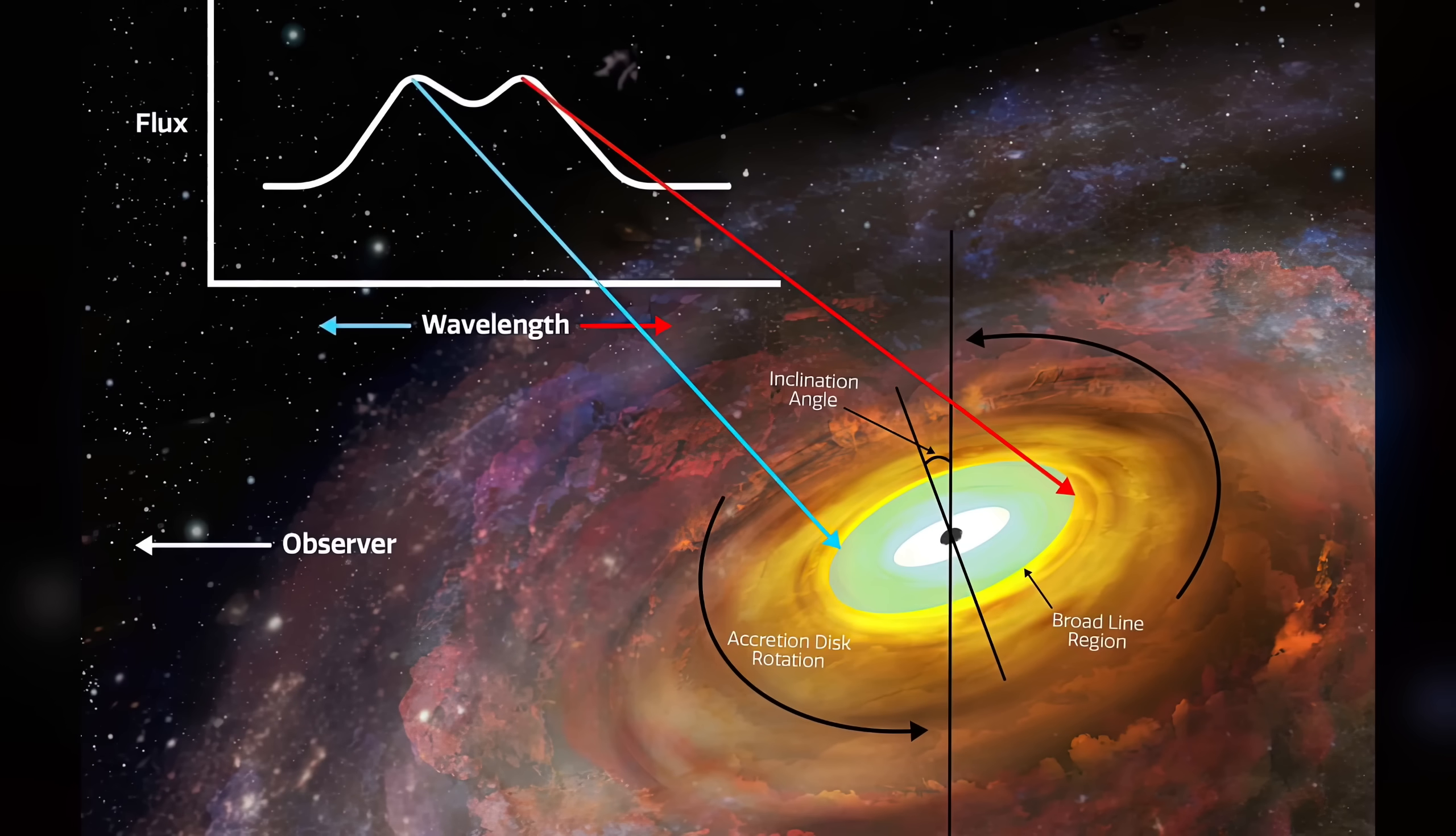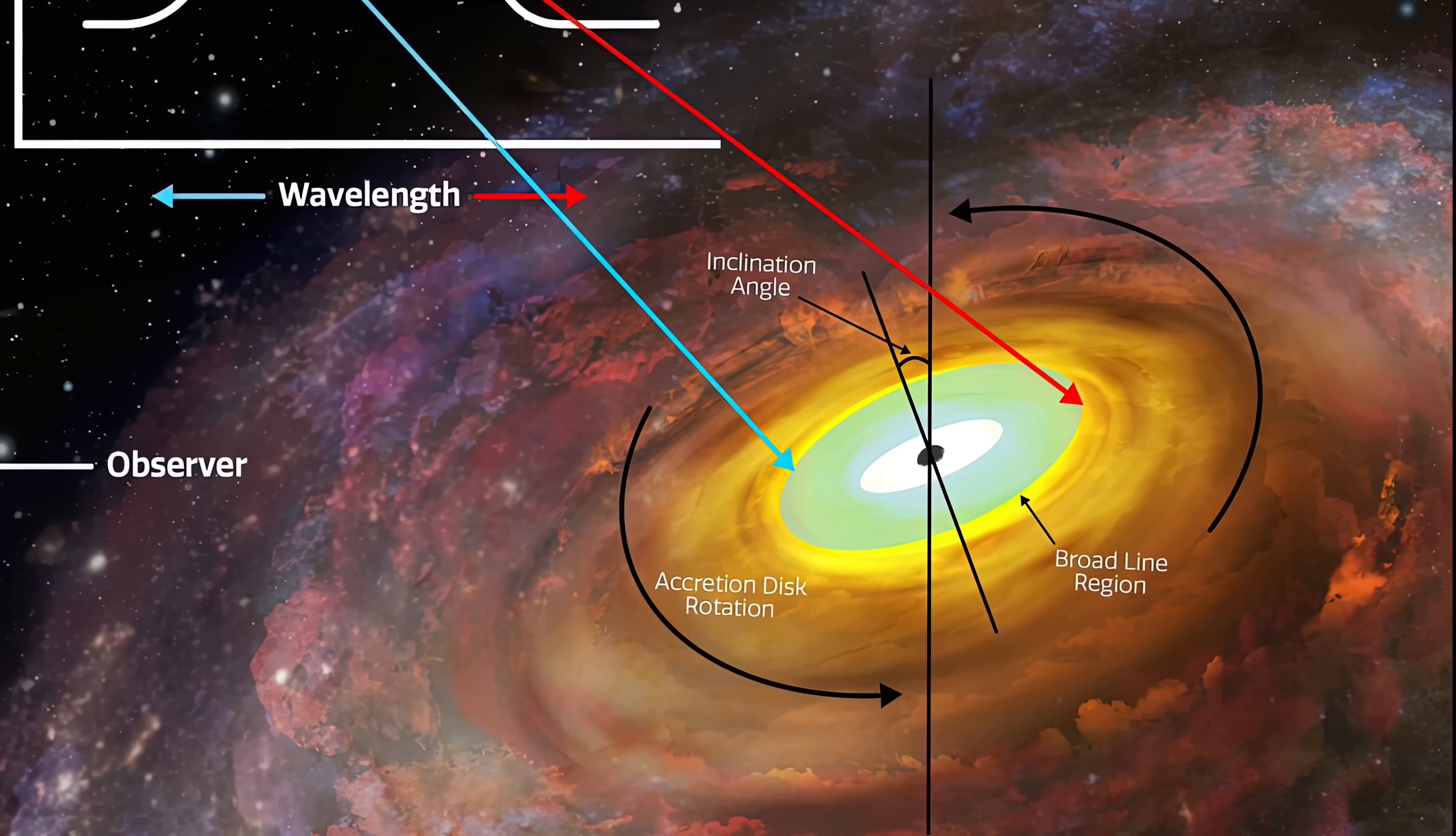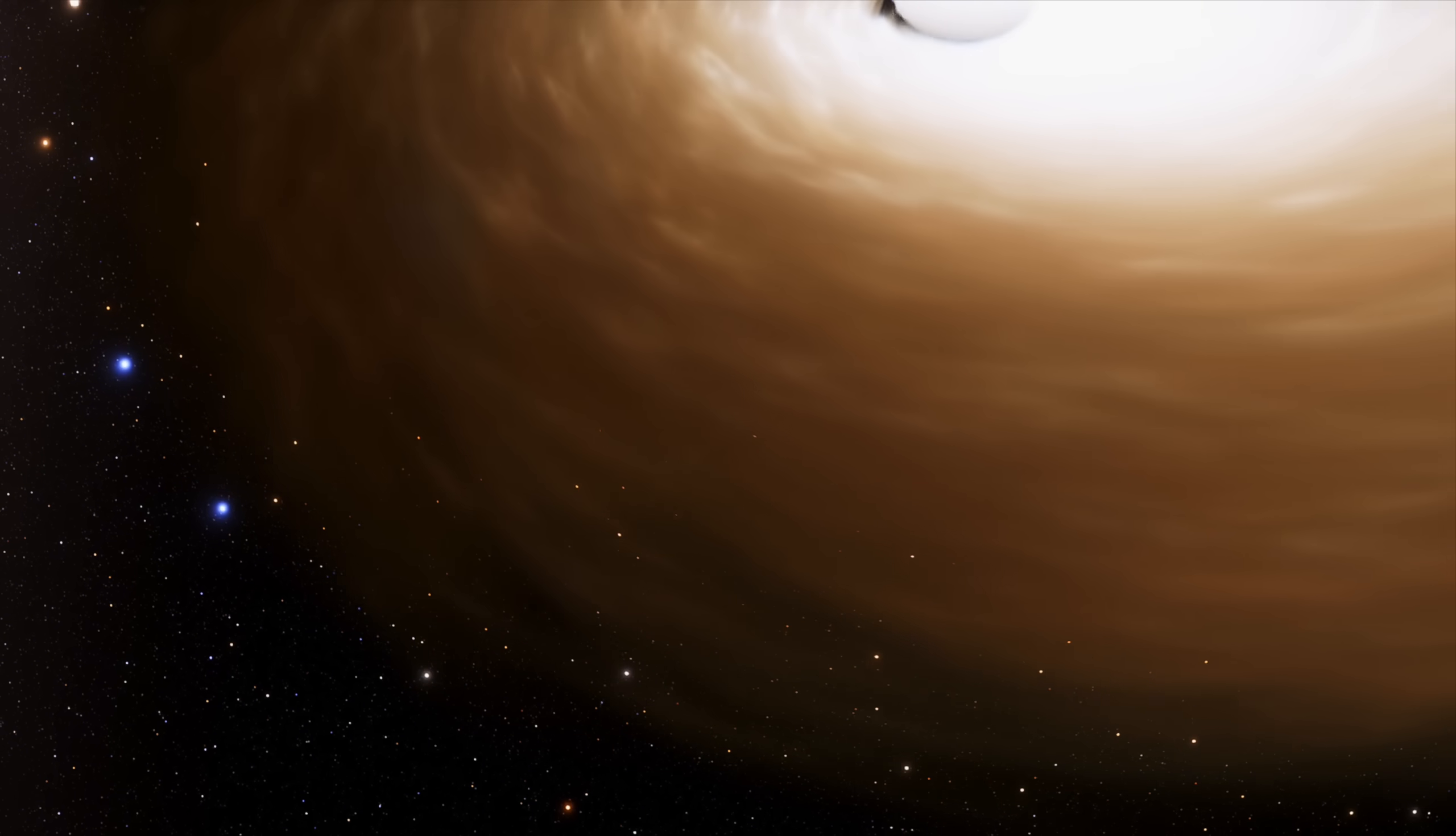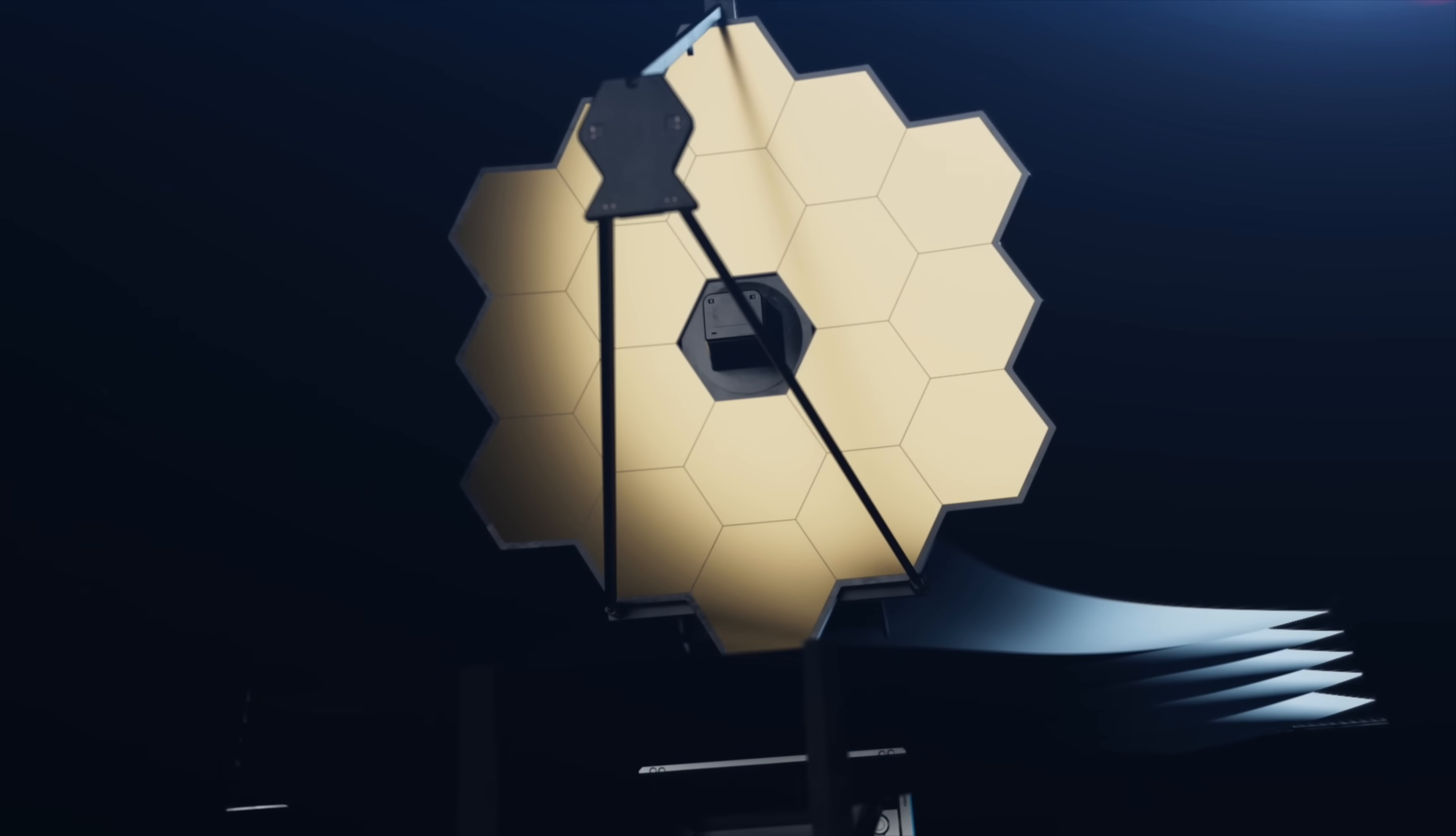The accretion disk is not a homogenous structure. It has distinct regions that behave differently depending on their proximity to the black hole. In the inner regions, matter swirls inward at incredible speeds, generating enormous amounts of heat and emitting high energy radiation. However, recent observations have provided new insights into the outer edges of these disks. For the first time, astronomers have observed the outer edge of an accretion disk, providing a clearer picture of its size and structure.